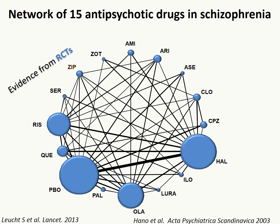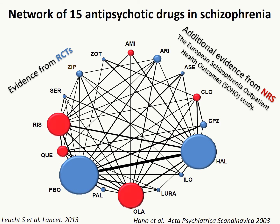Consider we are interested in comparing the efficacy of 15 antipsychotics in patients diagnosed with schizophrenia. Leucht and colleagues identified 168 trials that compared these interventions and synthesized them via network meta-analysis to obtain a treatment hierarchy and estimate all relative treatment effects. The primary efficacy outcome was the improvement in symptom scale, measured using the standardized mean difference. Subsequently, we obtained access to data from a large cohort study involving 11,000 participants that compared five active antipsychotics. Because of confidentiality agreements, the names of the drugs will be anonymized for the rest of the presentation.